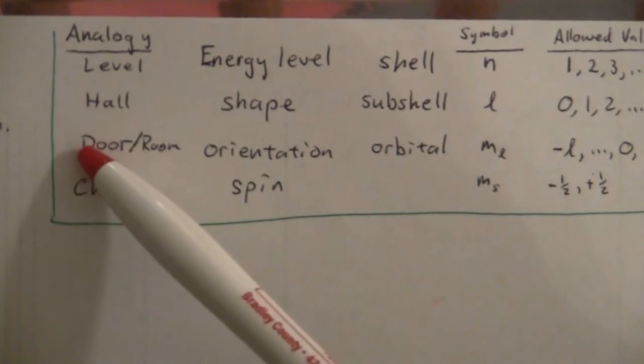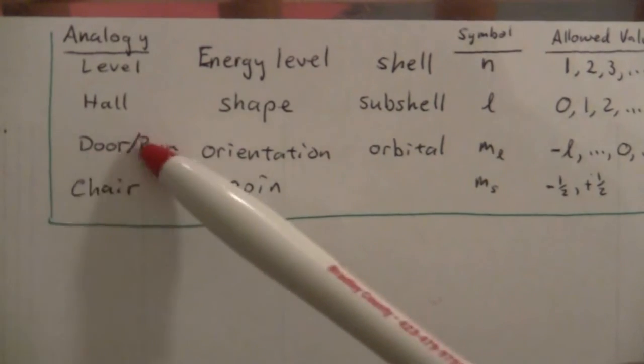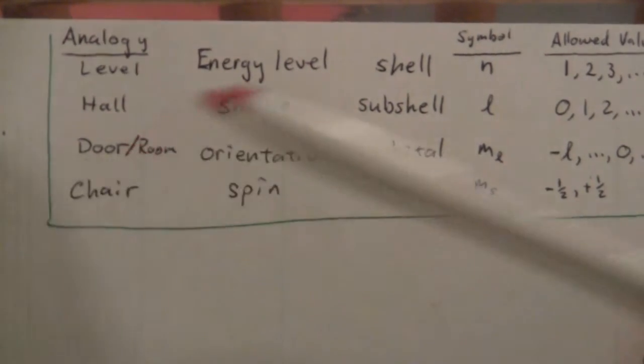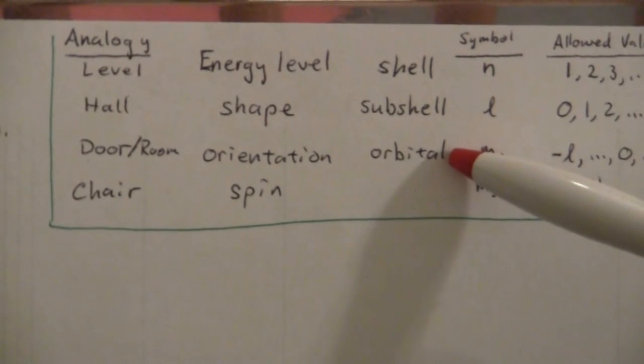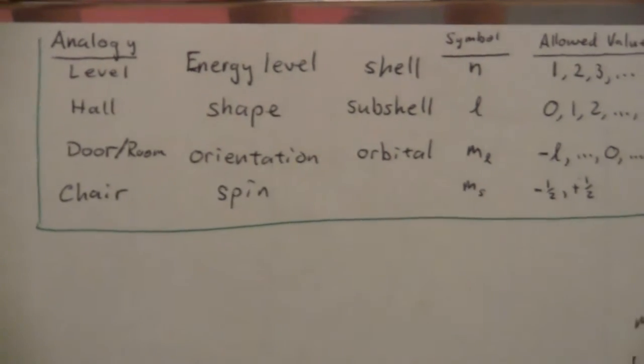And then there's a door or a room, a certain number of doors and rooms in each hallway. Those represent the orbitals. And within each orbital, there are two chairs for two electrons.